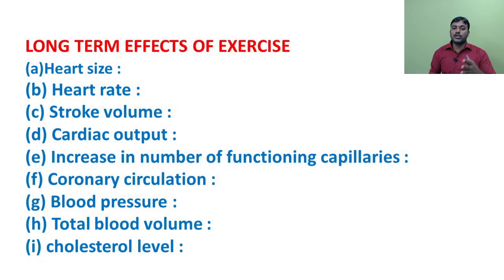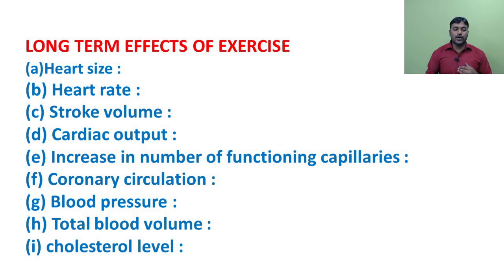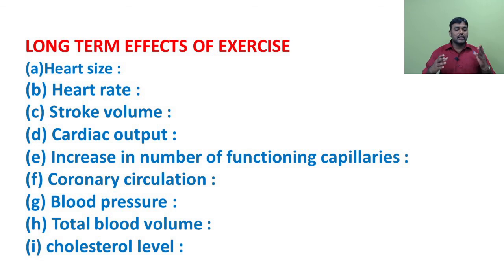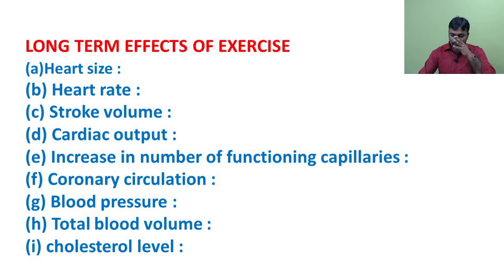The long-term effects of exercise on the cardiovascular system include changes in heart size, heart rate, stroke volume, cardiac output, number of functioning capillaries, coronary circulation, blood pressure, total blood volume, and cholesterol level. Regarding heart size: exercise has a well-established effect. Cardiac hypertrophy takes place in endurance-trained athletes; the bigger heart is also called the 'athletic heart.'